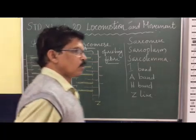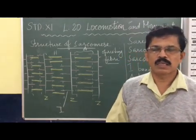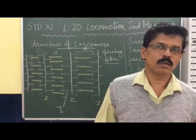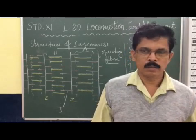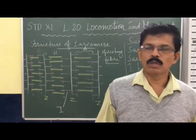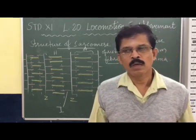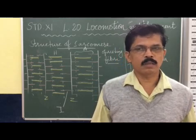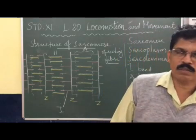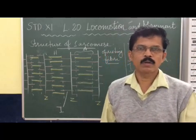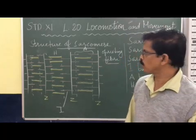Good morning children, we are continuing the chapter Locomotion and Movement. We have already studied the structure of muscle fibers. Muscle bundles consist of muscle fibers, muscle fibers contain sarcomeres — the functional unit. Sarcomeres in turn contain myofibrils or myofilaments called actin and myosin. Actin is the thin filament protein and myosin is the thick protein filament, as you can see in the picture.